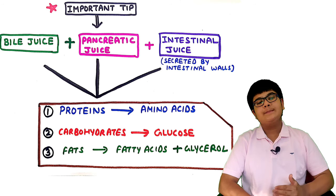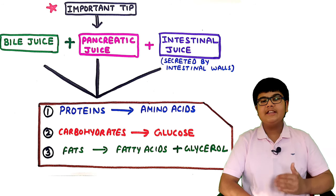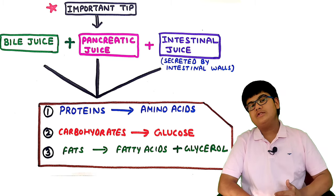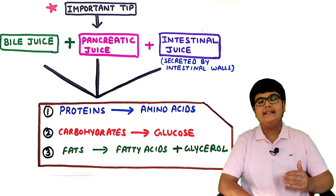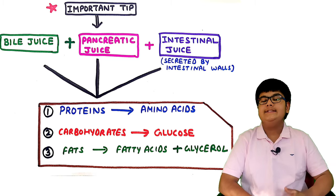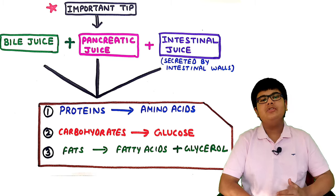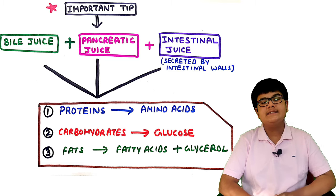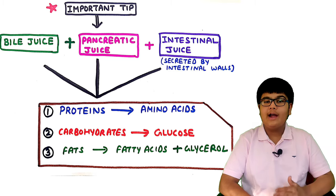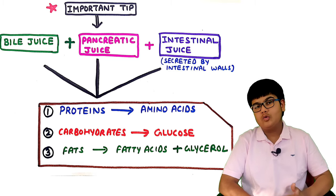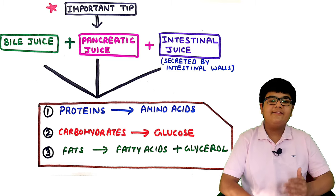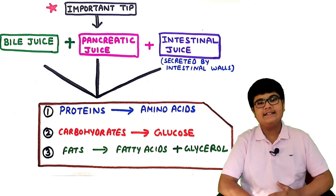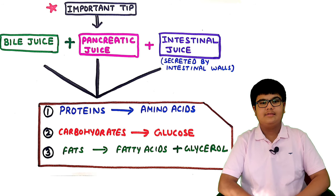Bile juice, pancreatic juice, and intestinal juice secreted by the intestinal walls together break down proteins into amino acids, carbohydrates into glucose, and fats into fatty acids and glycerol.